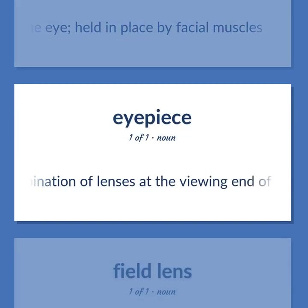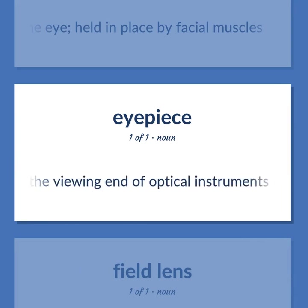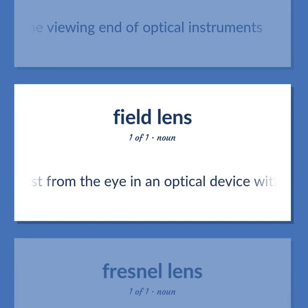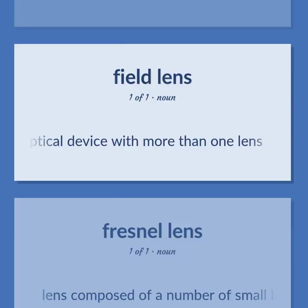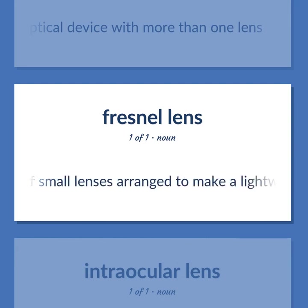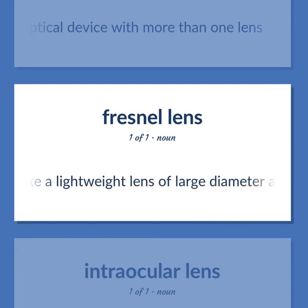Lens types: eyepiece — combination of lenses at the viewing end of optical instruments. Also: objective — the lens farthest from the eye in an optical device with more than one lens. Also: Fresnel lens — composed of a number of small lenses arranged to make a lightweight lens of large diameter and short focal length.